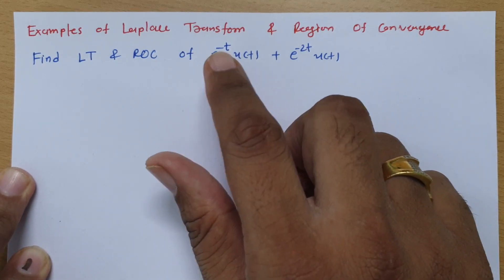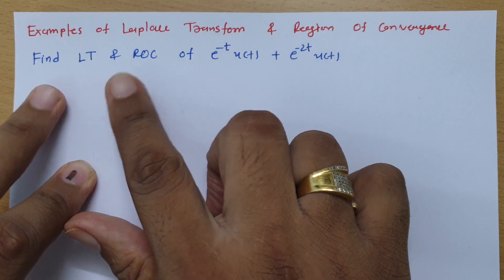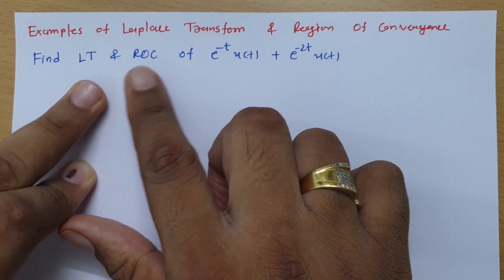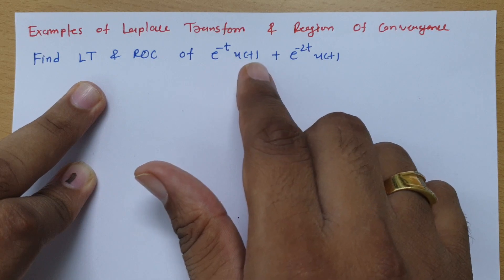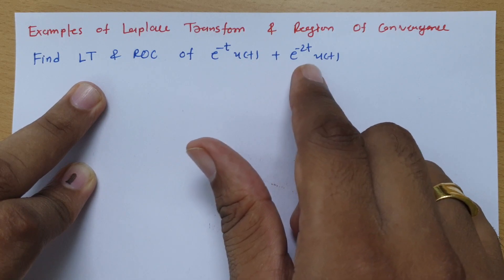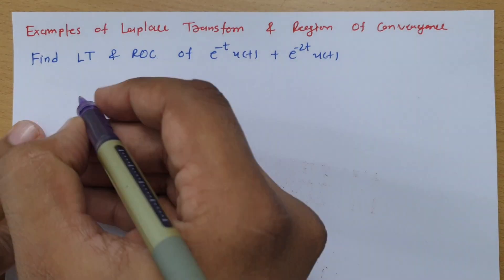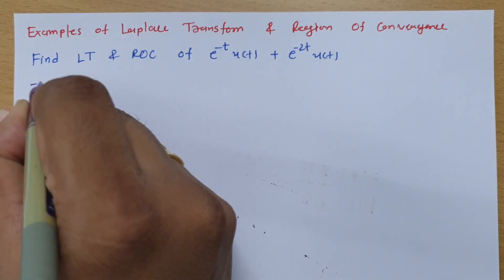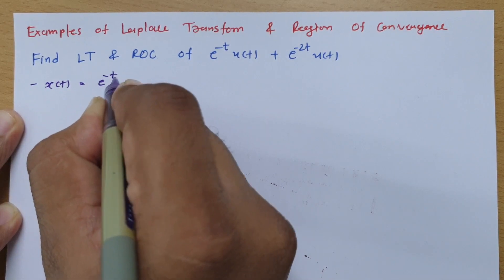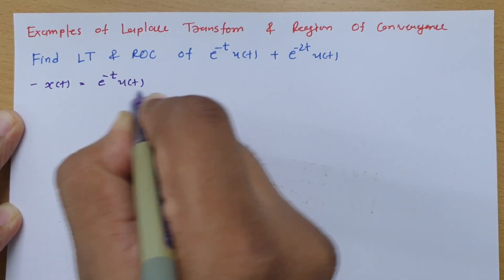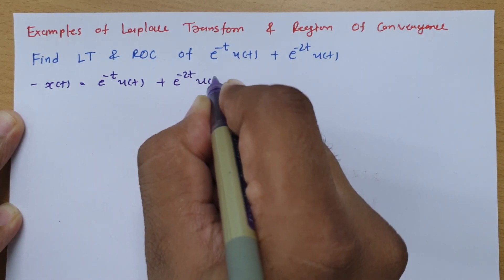The first problem is: find the Laplace transform and region of convergence for the signal x(t) = e^(-t)u(t) + e^(-2t)u(t).